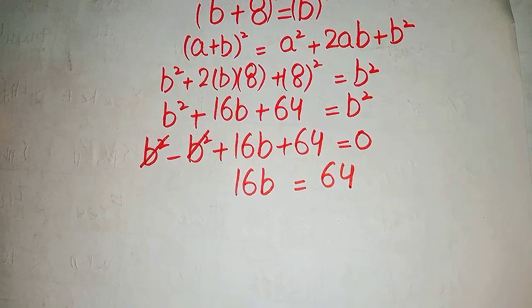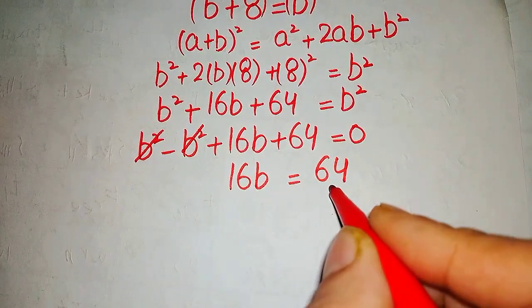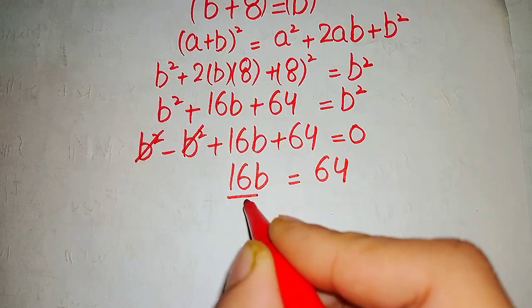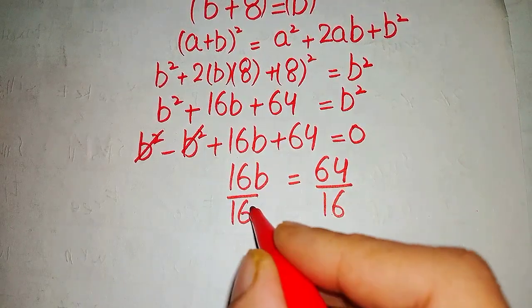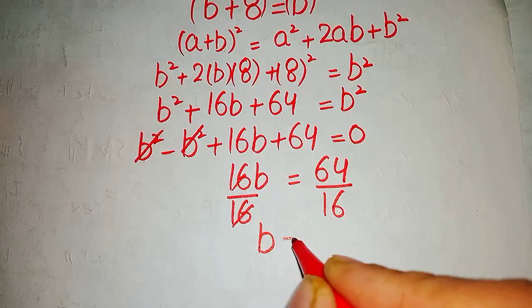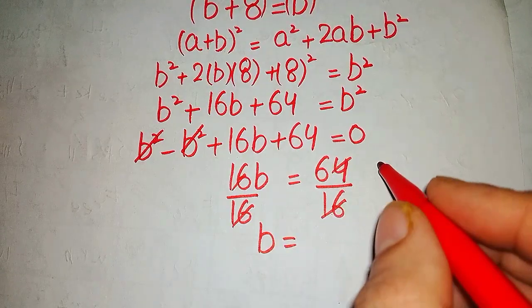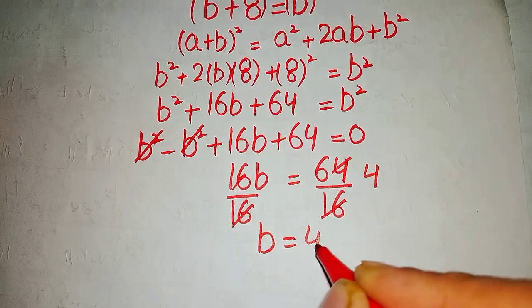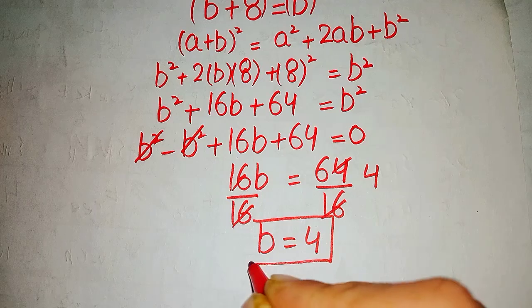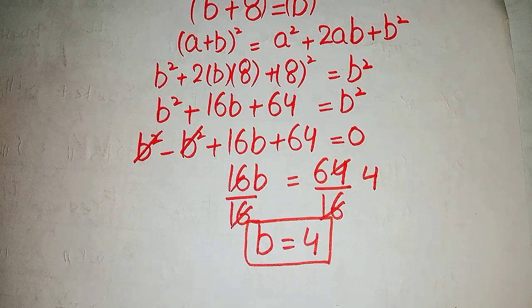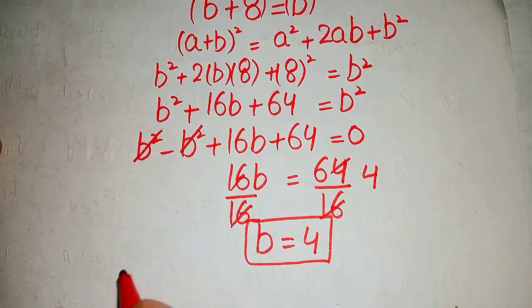Now we divide both sides of the equation by 16 and we got value of b equals to, 16 fours are 64, and value of b would become equal to 4. Now we verify whether this value of b verifies our given equation or not.